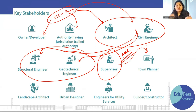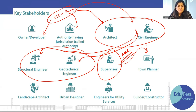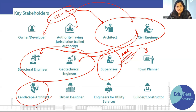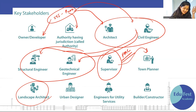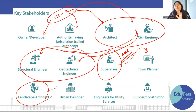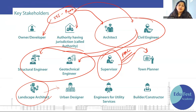We need a town planner, kyunki jab aap yeh poora sanctioning karte ho, the town planner is going to see ki DP mein uska reservation kya hai, sab kuch kya hai, is it going according to the rules, norms and everything or not. So the town planner comes into the picture. Starting ke entrance mein, how the landscape will look like — so landscape architect ka kaam aata hai, urban designer bolo, engineer for the utilities, builders — they all are the part and parcel of this administration.